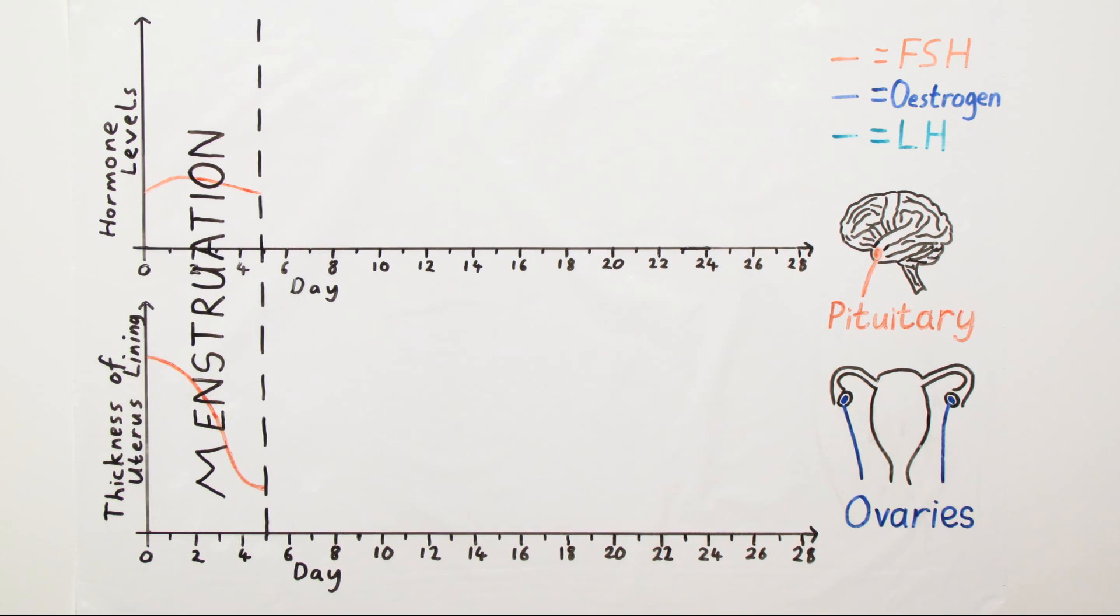Secondly, the ovaries start to produce an increasing amount of oestrogen. The oestrogen then goes on to have two effects of its own. Firstly, this increasing level of oestrogen causes the lining of the uterus to start to thicken again.